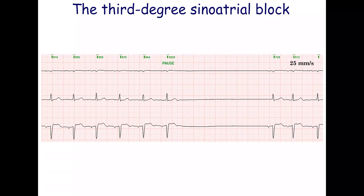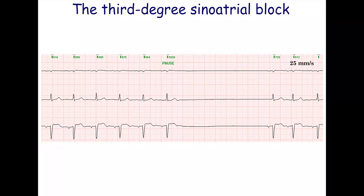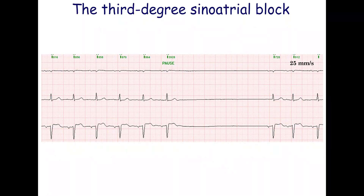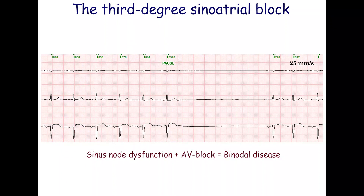This ECG shows an absence of both the P-wave and the QRS complex, resulting in a sinus pause of 3.9 seconds. There is also a slightly prolonged PR interval. Dysfunction of both the sinoatrial and atrioventricular nodes is called binodal disease.